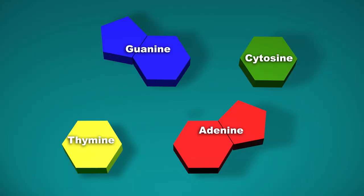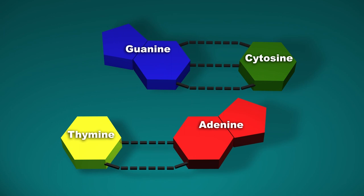Around the time that Drs. Chase and Hershey were looking at whether or not DNA transferred traits, Erwin Chargaff was looking at the structure of DNA. In his sequencing of DNA from many different creatures and tissues, Chargaff found that no matter the species, two things remained constant: first, the amount of thymine always matched the amount of adenine, and second, the amount of cytosine always matched the amount of guanine. This became known as Chargaff's rules.